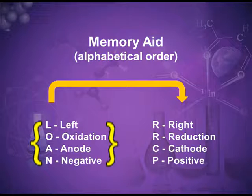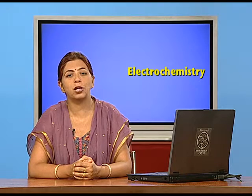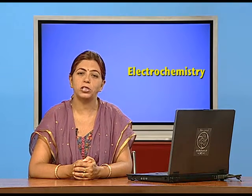Just reverse everything and you will get the other side — the reduction side. If on the left hand side there is loss of electrons, then on the right hand side it is gain of electrons. If on the left hand side loss of electrons is oxidation, then on the right hand side it is reduction, and it takes place at the cathode, which is the positive terminal.